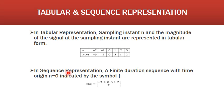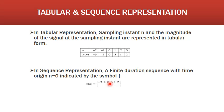The last one is sequence representation. A finite duration sequence has the time origin n = 0 indicated by the symbol up-arrow. In this example, the arrow indicates the amplitude at n = 0, meaning x(0) = 0. The value before the arrow indicates the value at n = -1, so x(-1) = 2, and x(-2) = -3. The value after the arrow indicates the amplitude at n = 1, so x(1) = 3, x(2) = 1, and x(3) = 2. This is the sequence representation of discrete time signal.